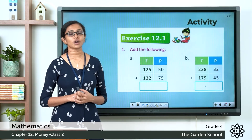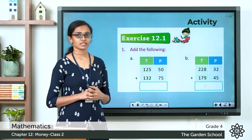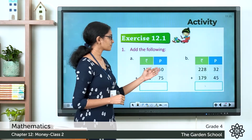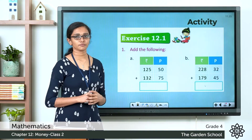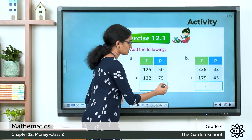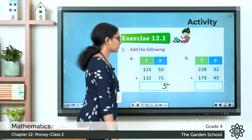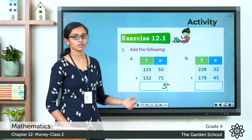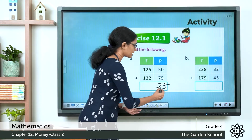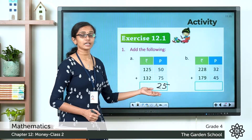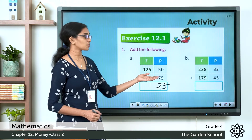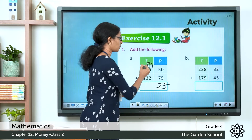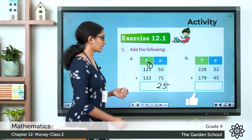Let's see what the total amounts are. For question a — starting with the paise column: 50 paise plus 75 paise. Units: 0 plus 5 is 5; tens: 5 plus 7 is 12, giving 125 paise. Write 25 paise in the paise column and carry over 1 rupee. In the rupee column: 5 plus 2 is 7, plus 1 is 8; then 2 plus 3 is 5; then 1 plus 1 is 2.